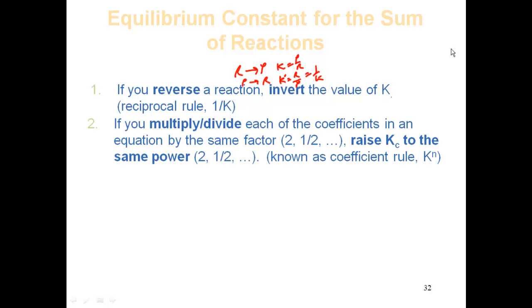Now, what happens when you multiply by a factor? In thermochemistry you multiplied delta H, but this is different. If reactants go to products with K equal to P over R, and you multiply everything by a factor of 2, that coefficient becomes a power — so it's P squared over R squared, meaning K is raised to the square as well. If you multiply or divide each coefficient by some factor n, you raise Kc to that same power. This is the coefficient rule: K to the n. You raise it to the power — you don't multiply it.